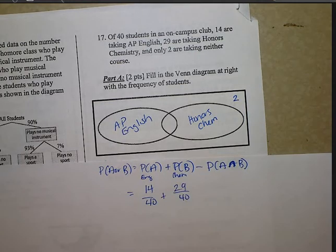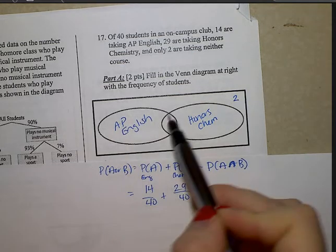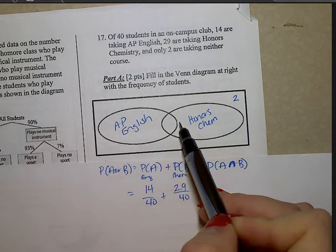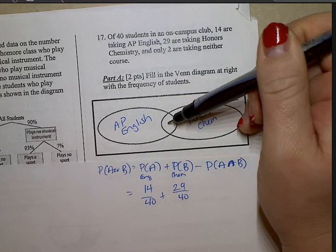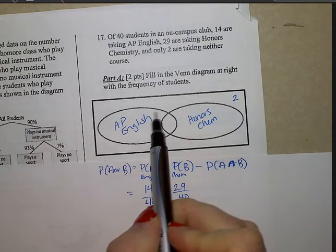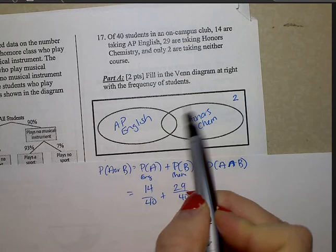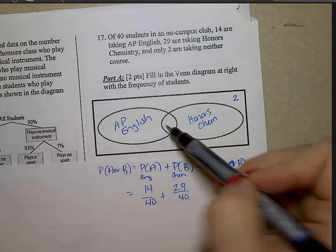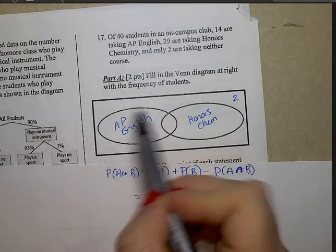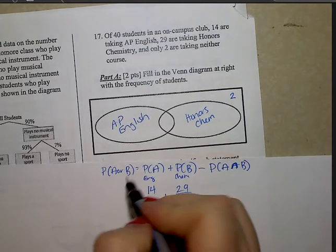And we know that together, if I push these two together, that would represent an or statement. An and would be just what's in between. I know the or statement because there's a total of 40 within this club, and 2 are not in either one of these. That means 38 have to be combined. So the or part would be 38.